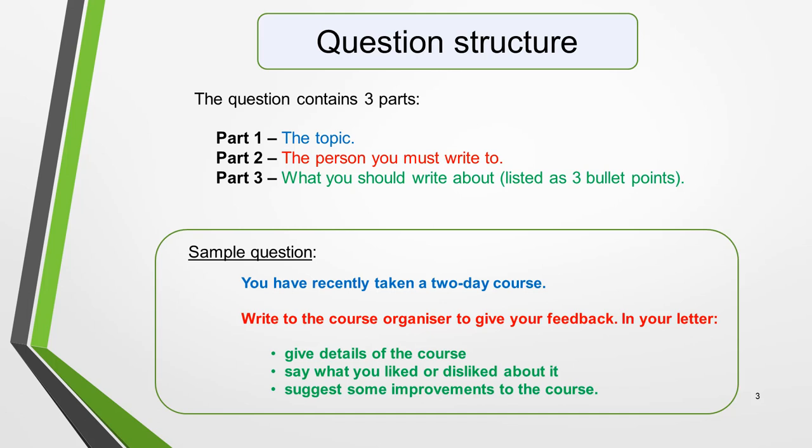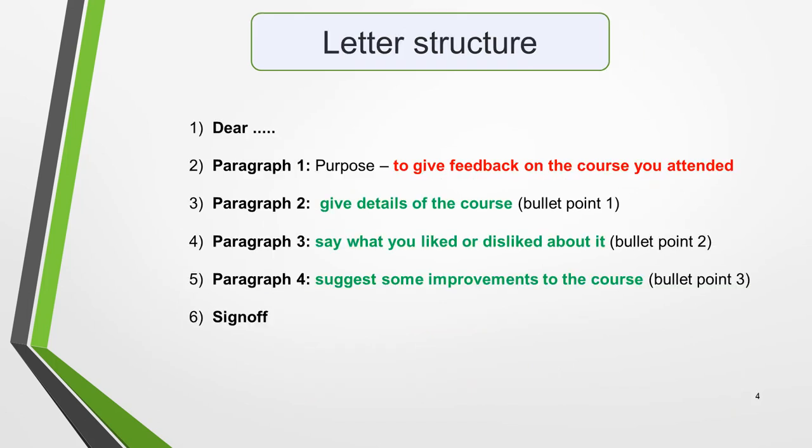Below the question structure is our sample question. I've used the same color coding to highlight the three different parts. So the topic is the two-day course you've recently taken, for which you must give feedback. And the person you must write to is the course organizer. The things you should write about are details of the course, what you liked or disliked about it, and some suggestions for improvements to the course.